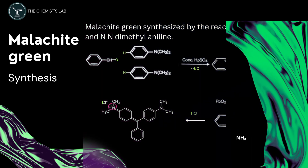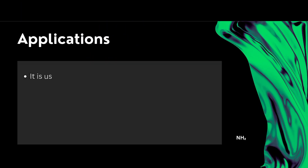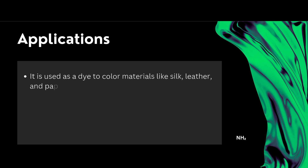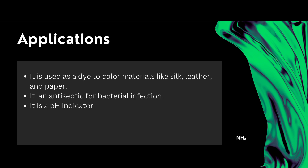Malachite green is used as a dye to color materials like silk, leather, and paper. It is also used as an antiseptic for bacterial infections, and it serves as a pH indicator between pH 0.2 to 1.